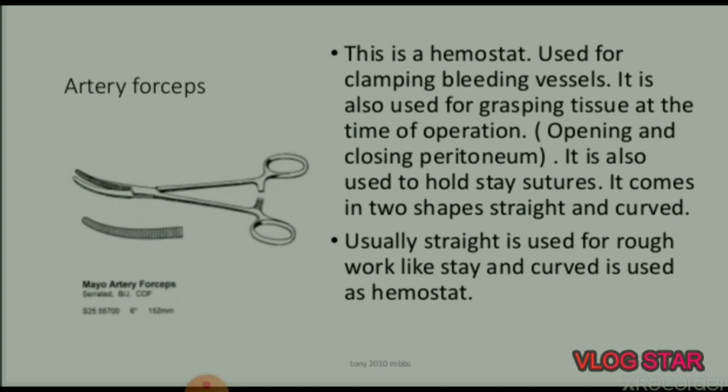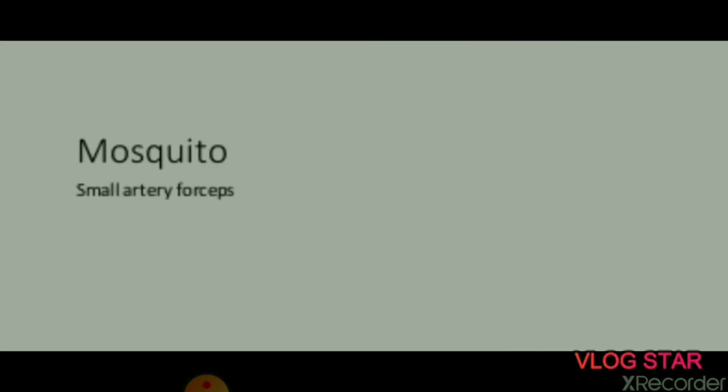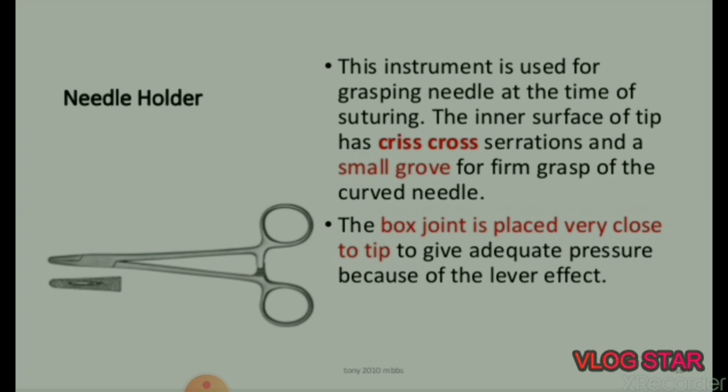Artery forceps: this is a hemostat used for clamping bleeding vessels. It is used for grasping tissue at the time of operation, opening and closing peritoneum, and also to hold stay sutures. It comes in two shapes: straight and curved. Straight is used for rough work like stay sutures, and curved is used as a hemostat. Mosquito forceps are small artery forceps.